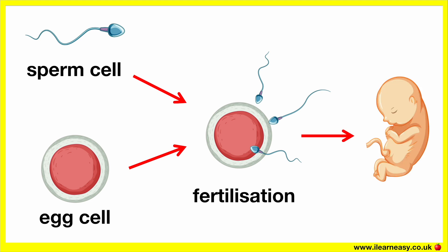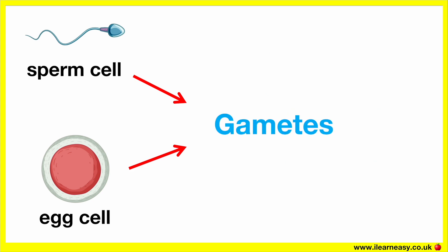Sperm cells and egg cells are known as gametes. Gametes are an organism's reproductive cells. They contain half the genetic information that all our other body cells have. Therefore, they are referred to as haploid.